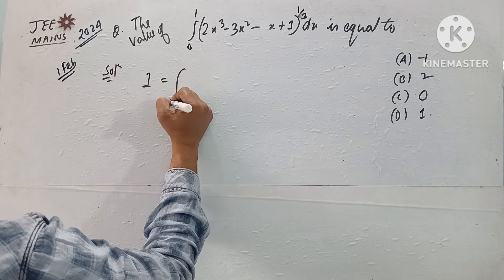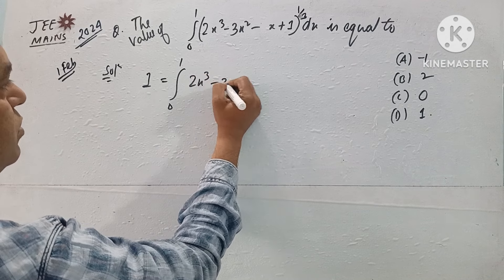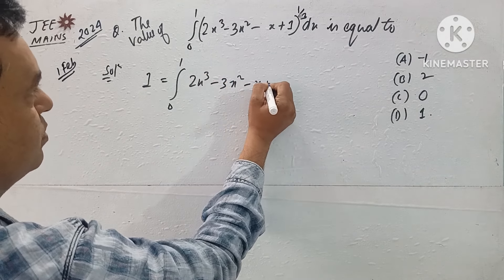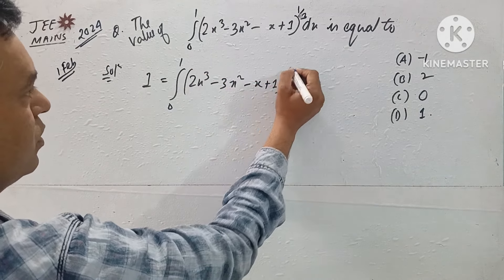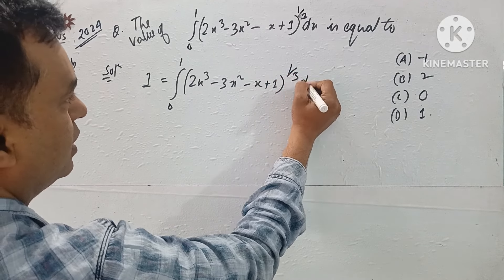So I equal to integral from 0 to 1 of (2x³ - 3x² - x + 1)^(1/3) dx.